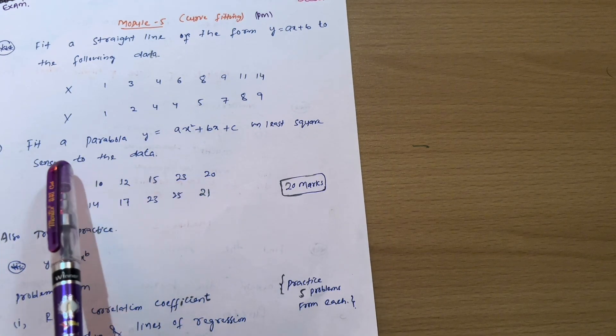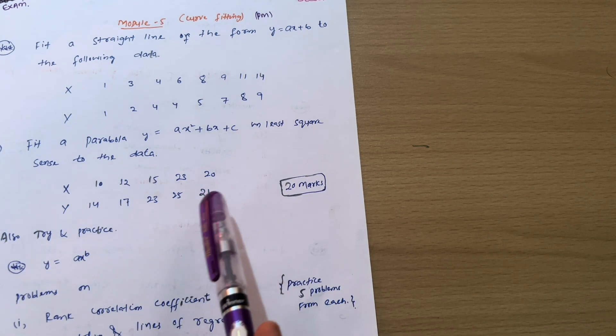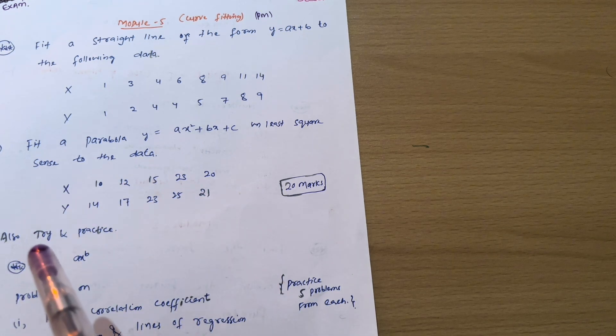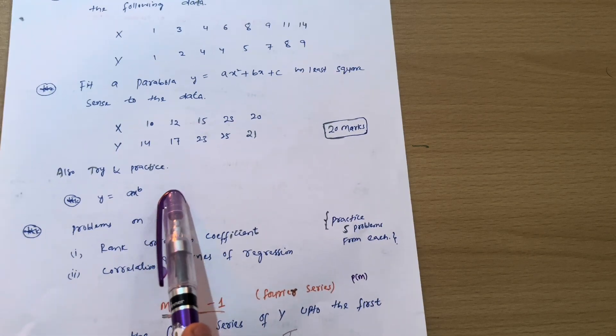So data will be somehow given like this one. So what you have to do, you have to fit a parabola curve. On this concept also, you have to focus on three to four problems in order to grab the concept. Next, we have y equals a x raised to power b. This is the power curve.